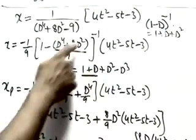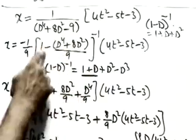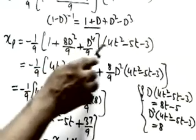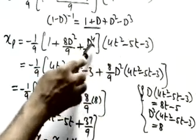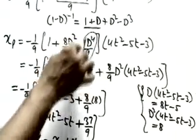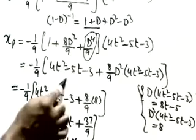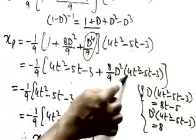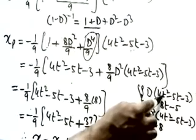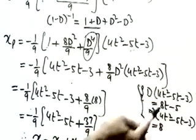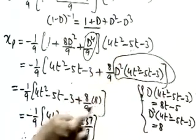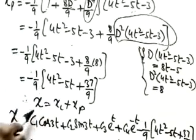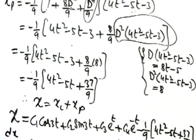For the particular integral of D⁴ + 8D² − 9 applied to 4t² − 5t − 3: take −9 common to get (−1/9)(1 − (8D² + D⁴)/9)^(−1). Since the highest power of t is 2, expand using the binomial formula 1 + d + d² keeping terms up to D². D⁴ of t² = 0, so leave that. Then: 1 × (4t² − 5t) + (8/9)D²(4t²) = (4t² − 5t) + (8/9)(8) = 4t² − 5t + 64/9.